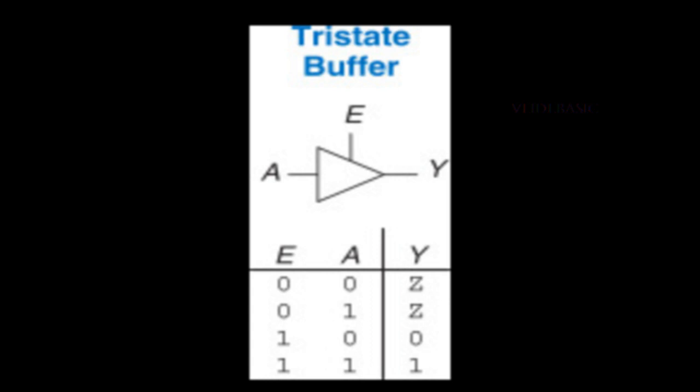You can see in the picture this is the symbol of tri-state buffer. There are two inputs, A and enable E, and Y is the output.